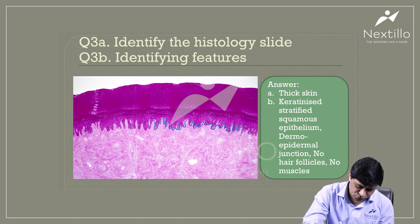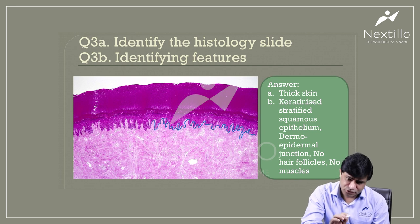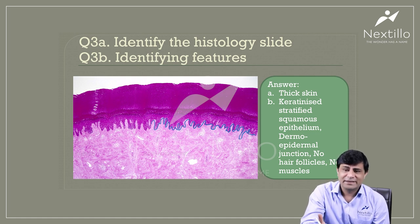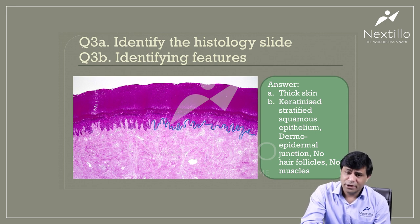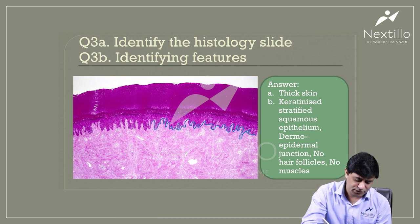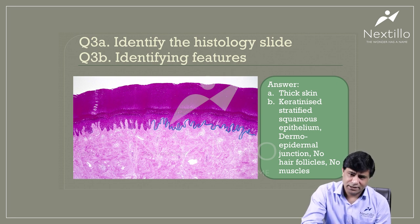This confirms that the epithelium is at least stratified squamous epithelium. The papillary projections are more marked in thick skin to increase the surface area of the stratum basale, providing more surface for actively dividing cells and more blood and nutrition to reach the epidermis. There were no hair follicles — differentiating it from thin skin — and no underlying skeletal muscles ruling out tongue, where you'd also find lymphatic follicles and serous and mucous glands. So this is confirmed as thick skin.